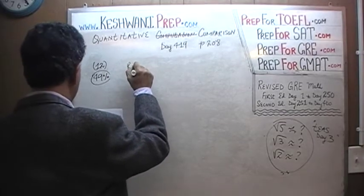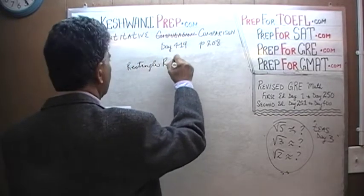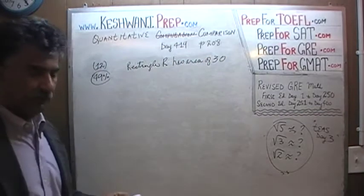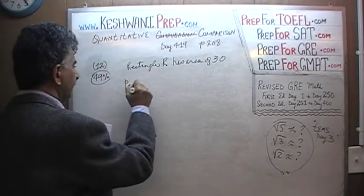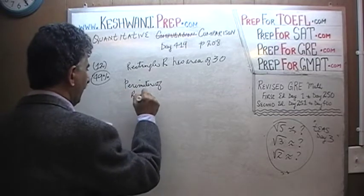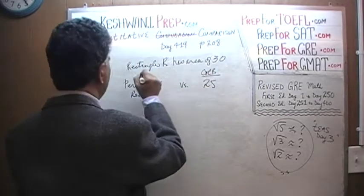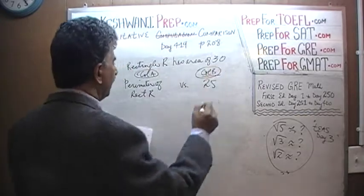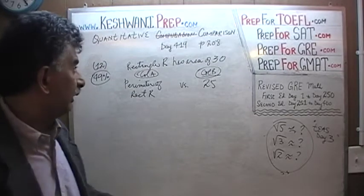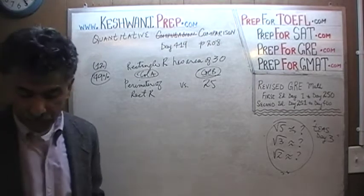Here's the problem. We are told that we have a rectangle R with an area of 30. What we are being asked to compare is the perimeter of rectangle R versus 25. Column A is the perimeter of rectangle R, column B is 25. We simply have to compare the perimeter of the rectangle — whose area we are told is 30 — against 25. Pause the video and do it yourself.